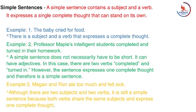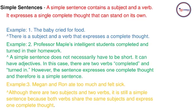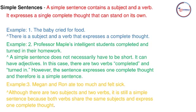A simple sentence requires one subject, one verb, one complete thought, and is an independent clause. Consider 'Professor Maple's intelligent students completed and turned in their homework' — it's a longer sentence, but still simple because the subject is 'Professor Maple's intelligent students,' the verb is 'completed and turned,' and it expresses one idea. Similarly, 'Megan and Ron aged too much and felt sick' — though there are two subjects, they share one verb and express one idea, making it simple.